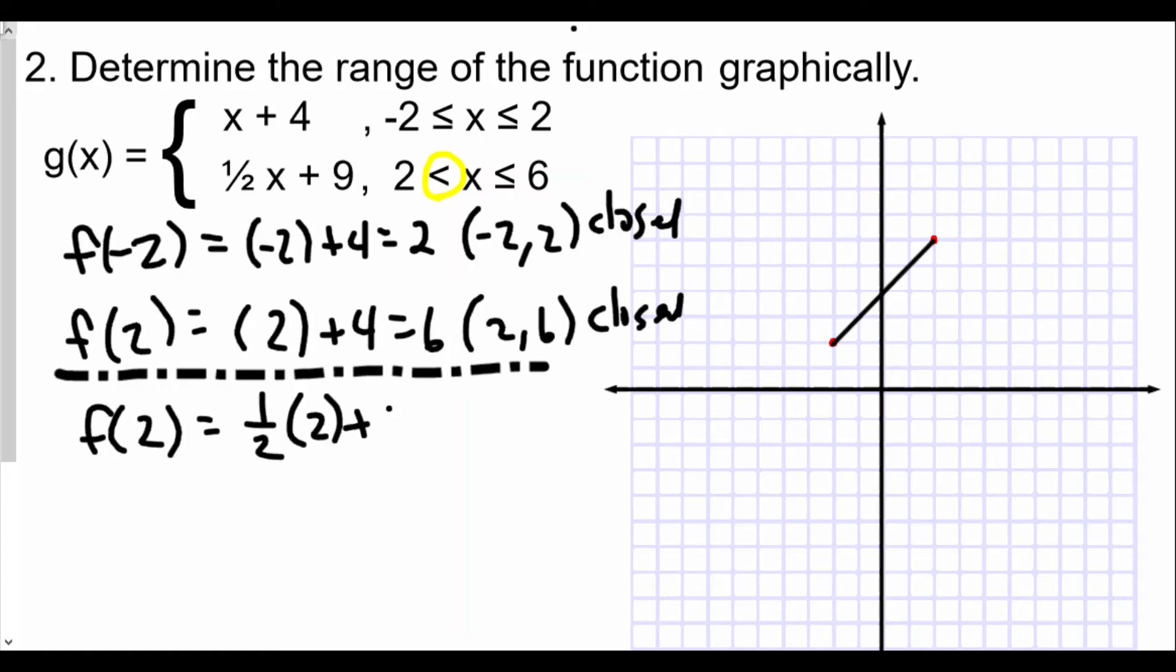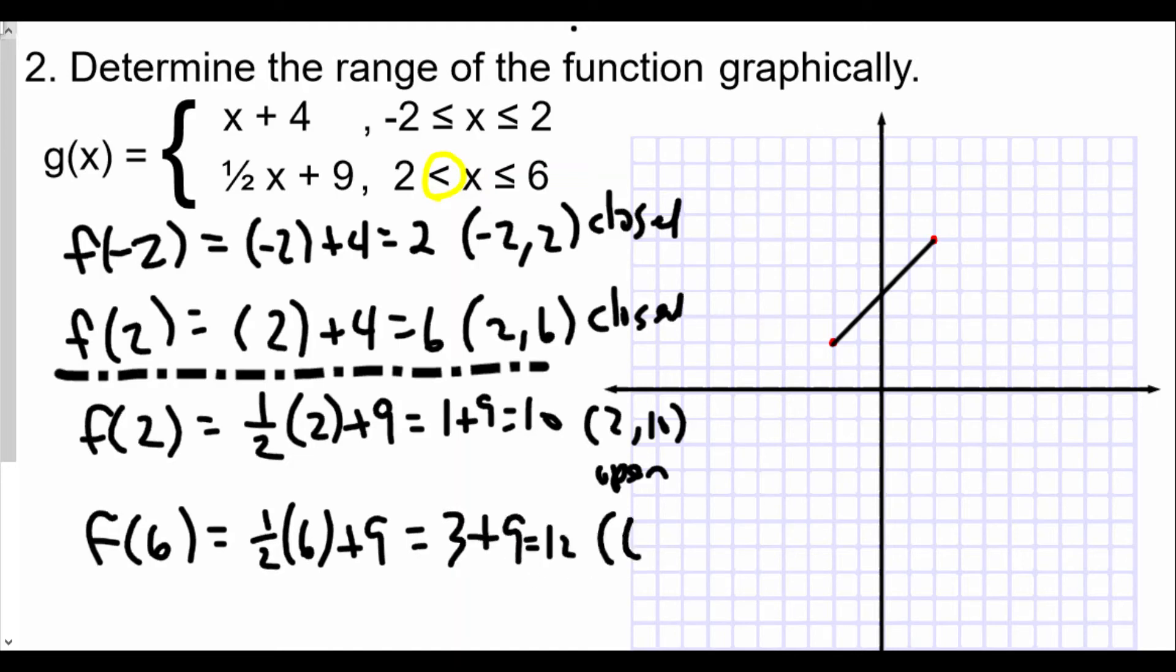That means you have 1 plus 9 equals 10, so we'll have the coordinate (2, 10), but that'll be an open circle. The other endpoint will be f(6): ½ times 6 plus 9, which is 3 plus 9 or 12. So our other endpoint will be (6, 12).